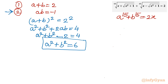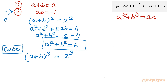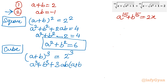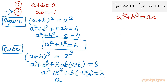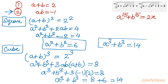Now I will consider the cube of equation 1: (a + b)³ = 8. Expanding: a³ + b³ + 3ab(a + b) = 8. Substituting ab = -1 and a + b = 2: a³ + b³ + 3(-1)(2) = 8, so a³ + b³ = 8 + 6 = 14.